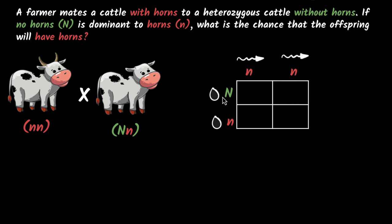If this sperm fertilizes this egg, we get capital N, small n. If this sperm fertilizes this egg, we get, again, capital N, small n. If this sperm fertilizes this egg, we get small n, small n, and if this sperm fertilizes this egg, we get small n, small n.